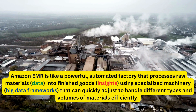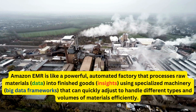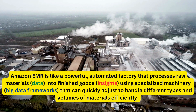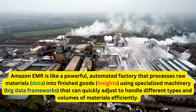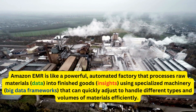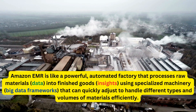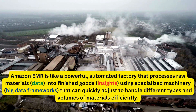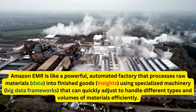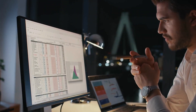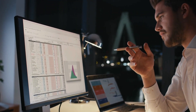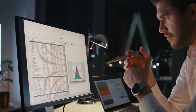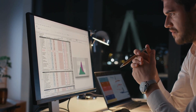Amazon EMR is like a powerful, automated factory that processes raw materials — data — into finished goods — insights — using specialized machinery — big data frameworks — that can quickly adjust to handle different types and volumes of materials efficiently. EMR is optimized for cloud efficiency, enabling you to quickly and cost-effectively process vast amounts of data.